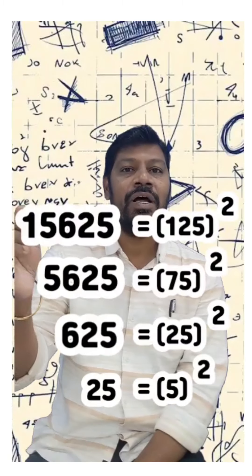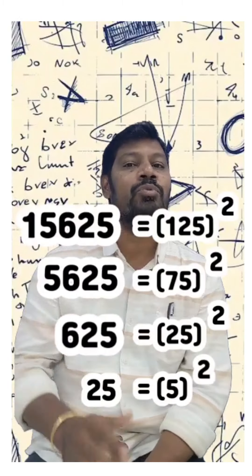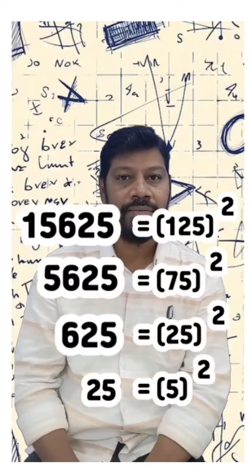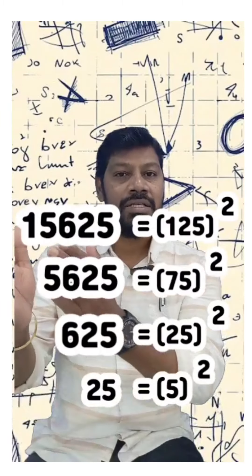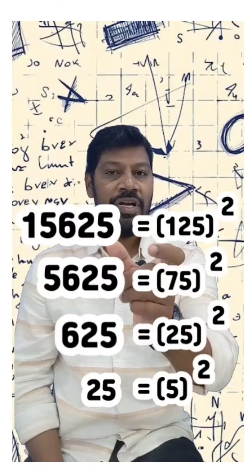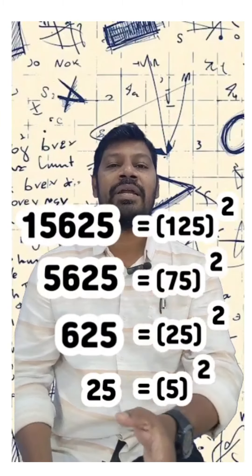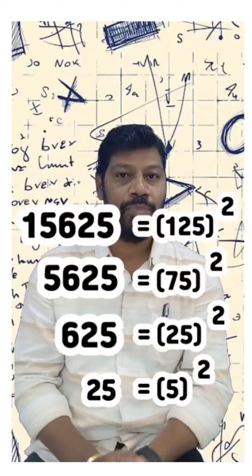So, 15625 is a perfect square. First there is 5 squared, then 25 squared, then 625, then 5625. By doing this, the perfect square property is the same — very stable.